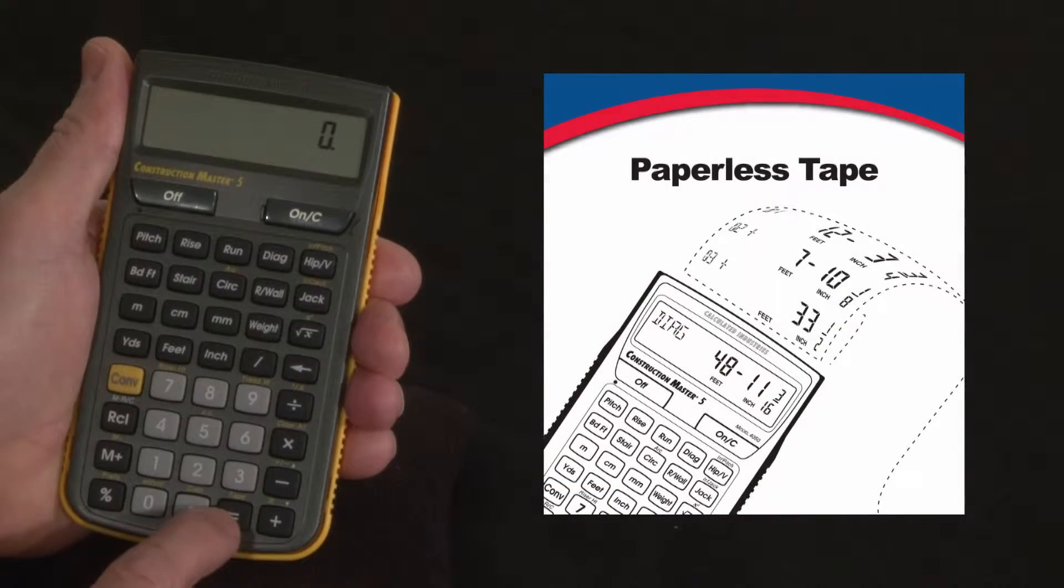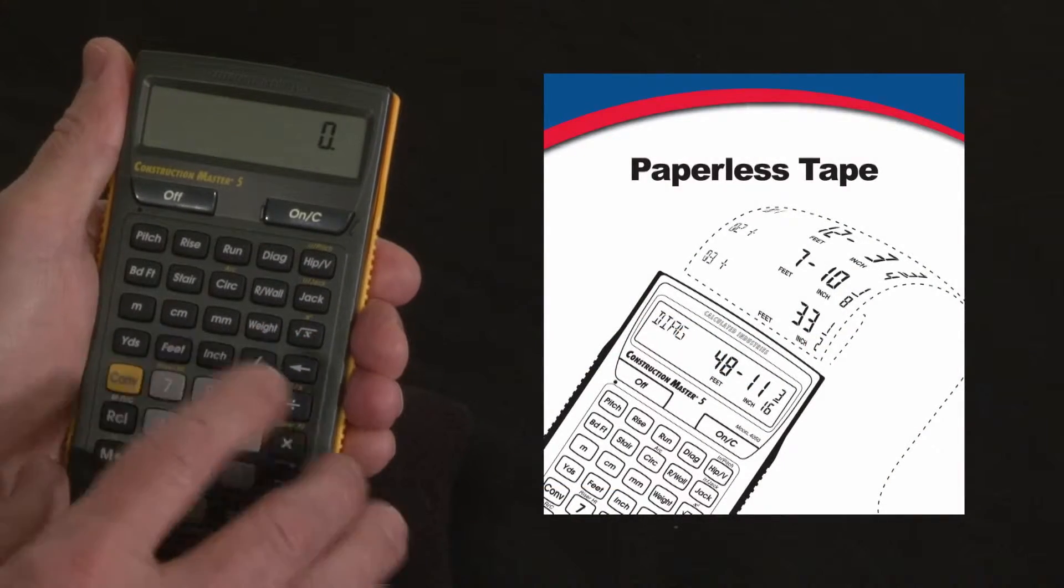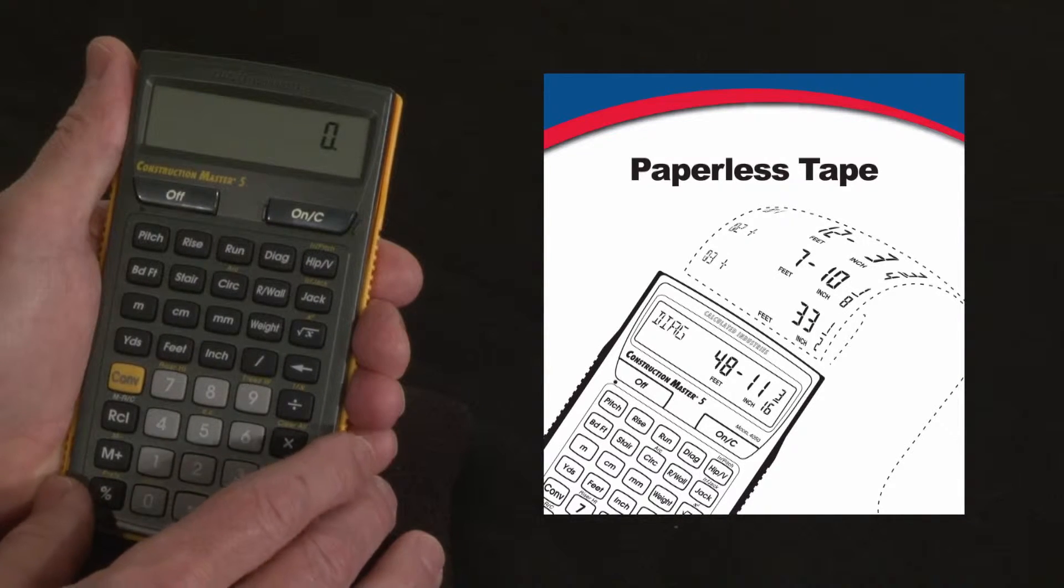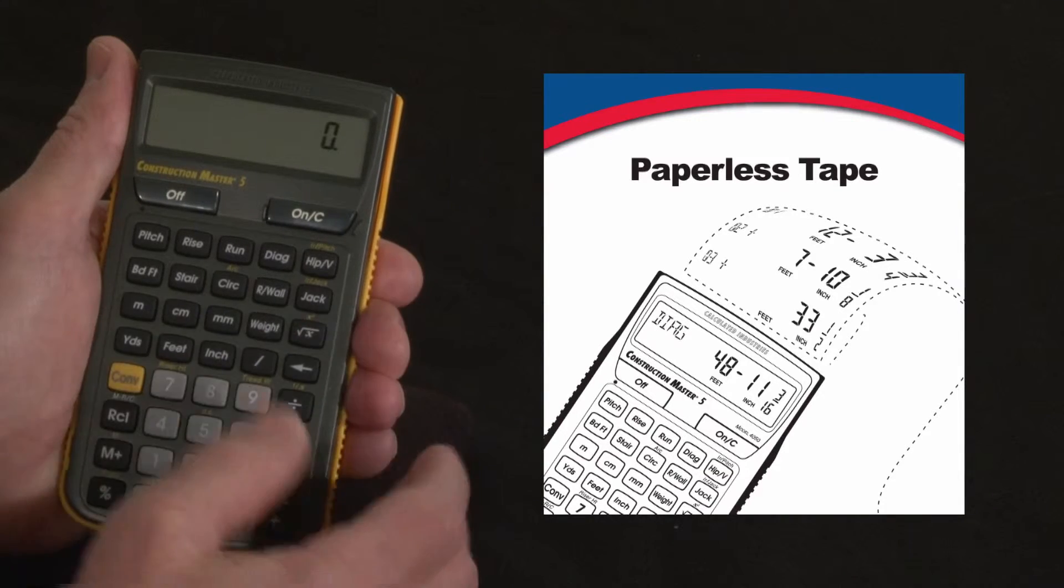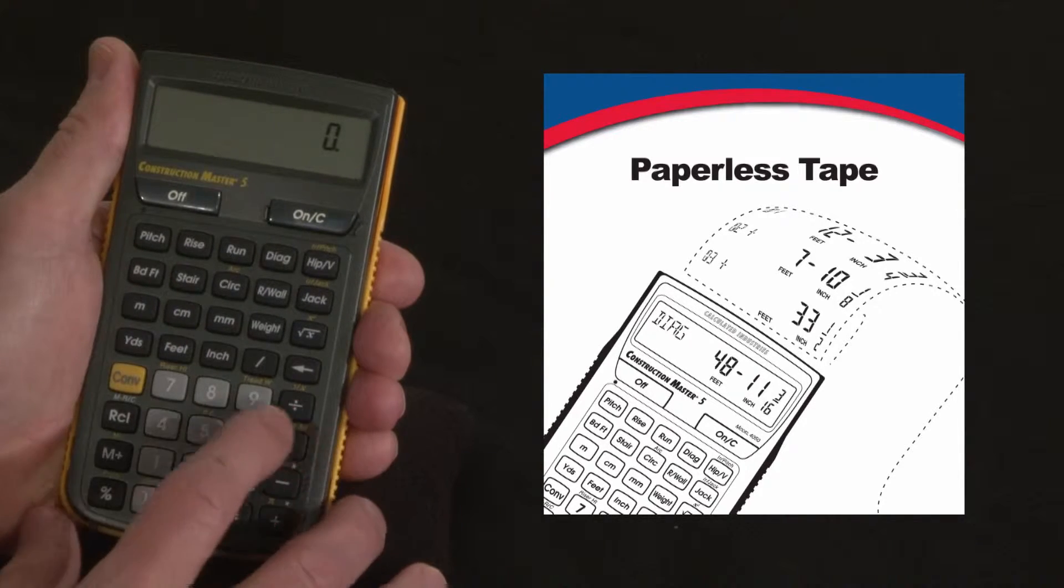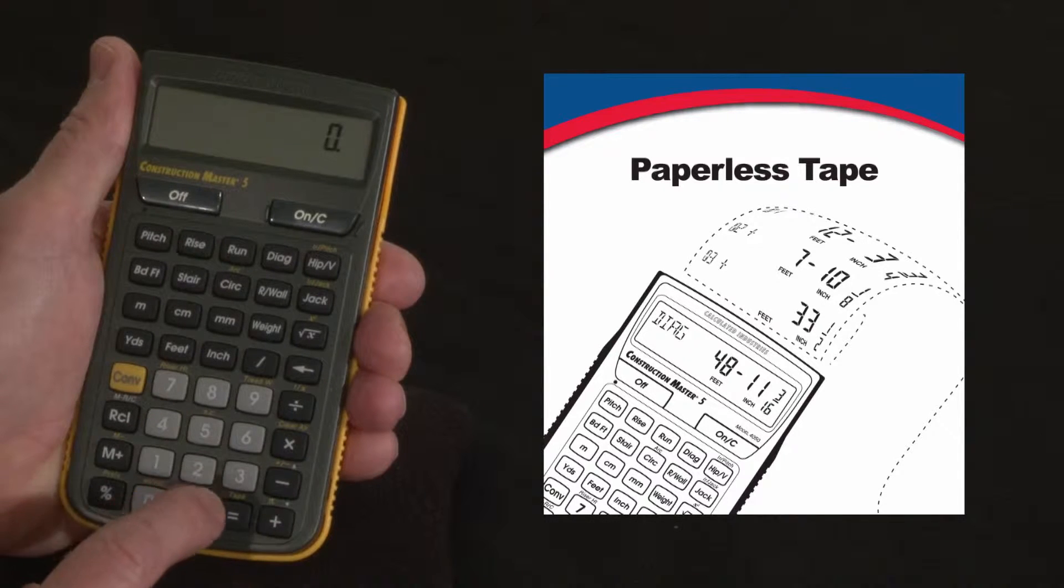Let me show you how to save time with the paperless tape function. One of the primary uses of this calculator is adding strings of dimensions. A lot of guys tell me they re-enter the dimensions two or three times, and that's smart to double check, but it's unnecessary. You can double check your answers without doubling your work if you use the paperless tape function.